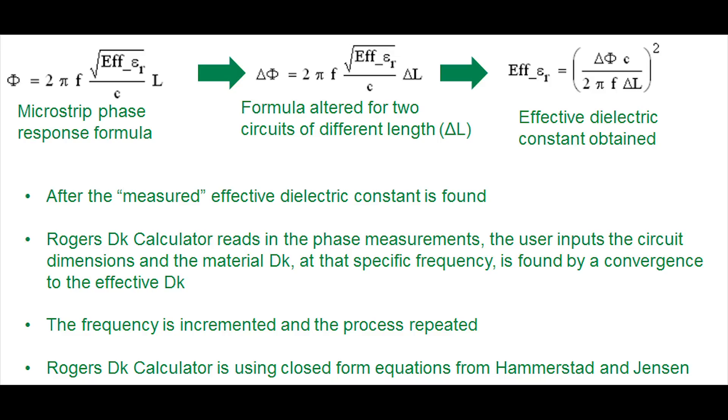After that, we use the software that's downloadable from the Rogers Technology Support Hub website. That software uses closed form equations from a well-known paper by Hammerstad and Jensen. The software will read in the phase measurements for the short circuit and the long circuit from network analyzers. The user will also input the circuit dimensions, the conductor widths, the substrate thickness, everything that defines the circuit. When the calculation is done, the software will do a convergence routine to converge to the dielectric constant of the material based on all the information read into it. That's for one specific frequency. Then the software will increment to the next frequency and go through the same process all over again. What you get out of that is a dielectric constant versus frequency curve.